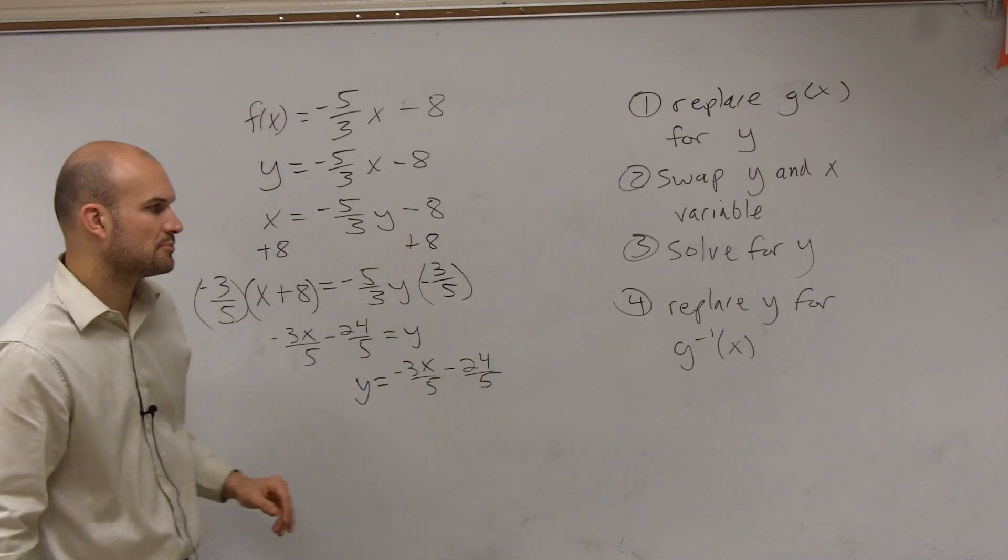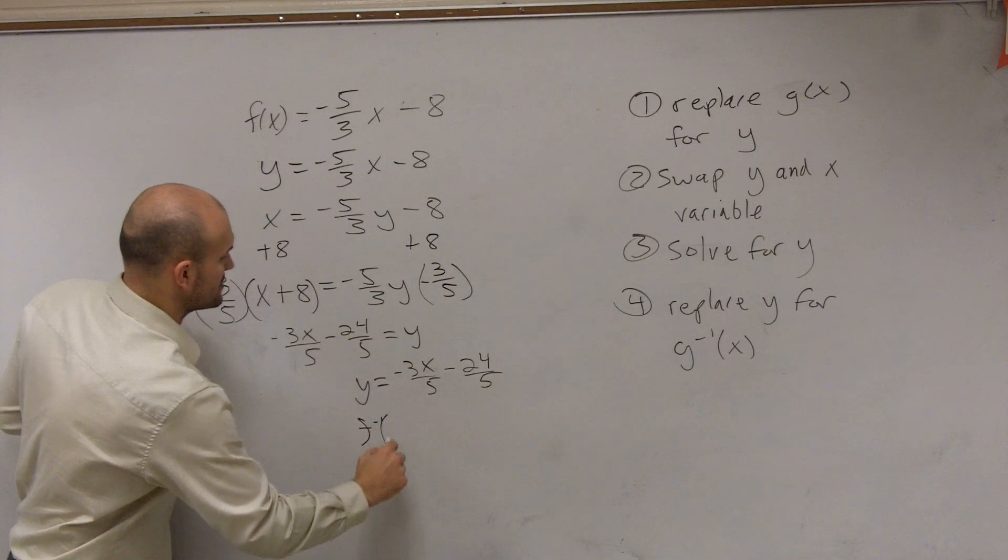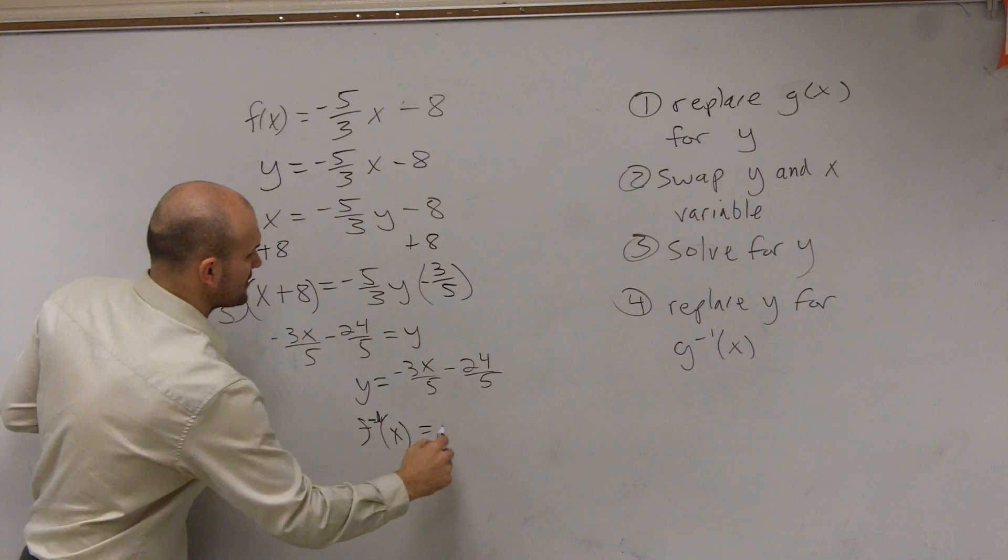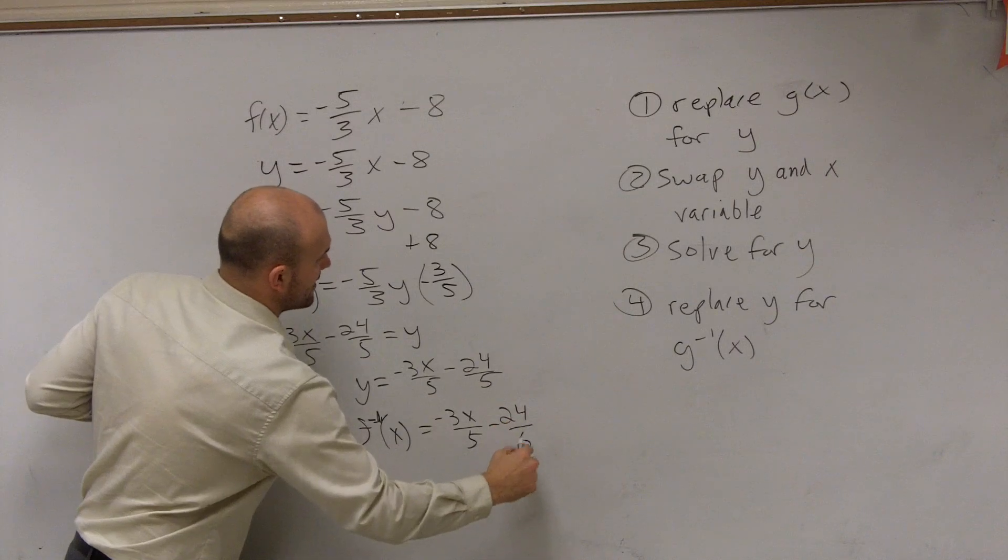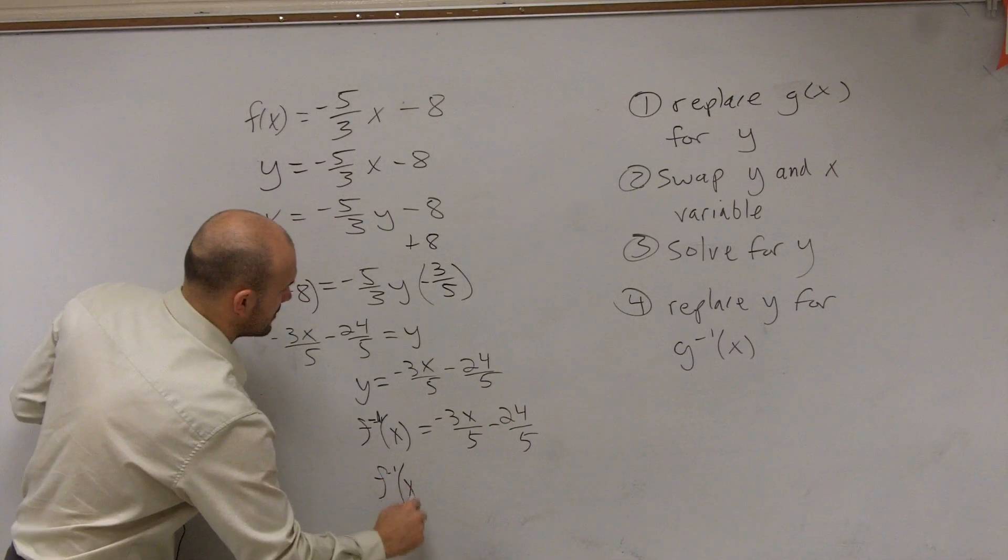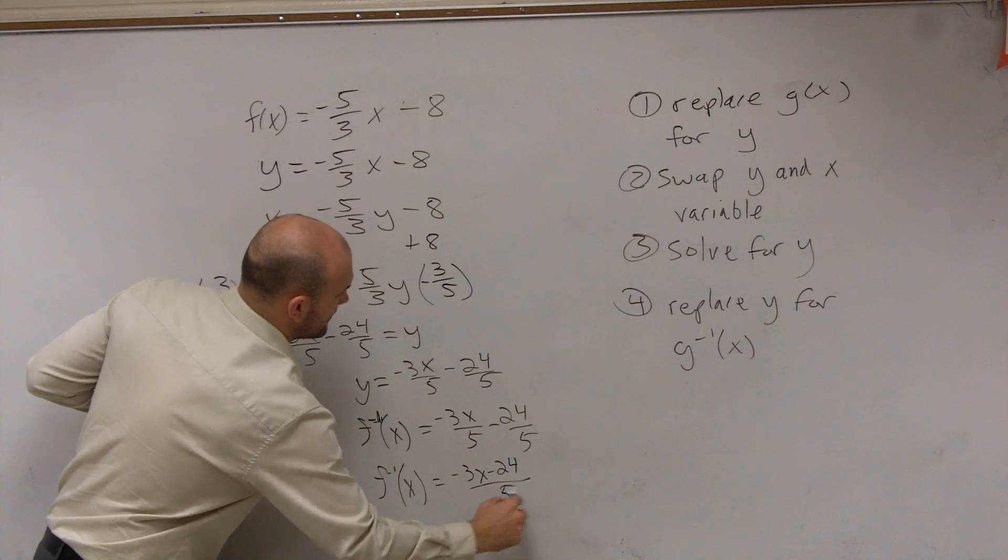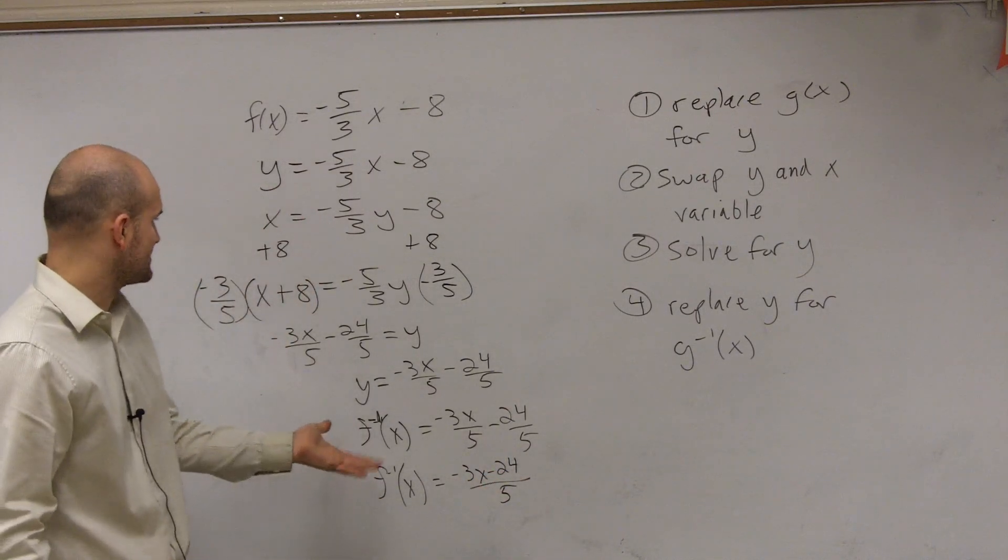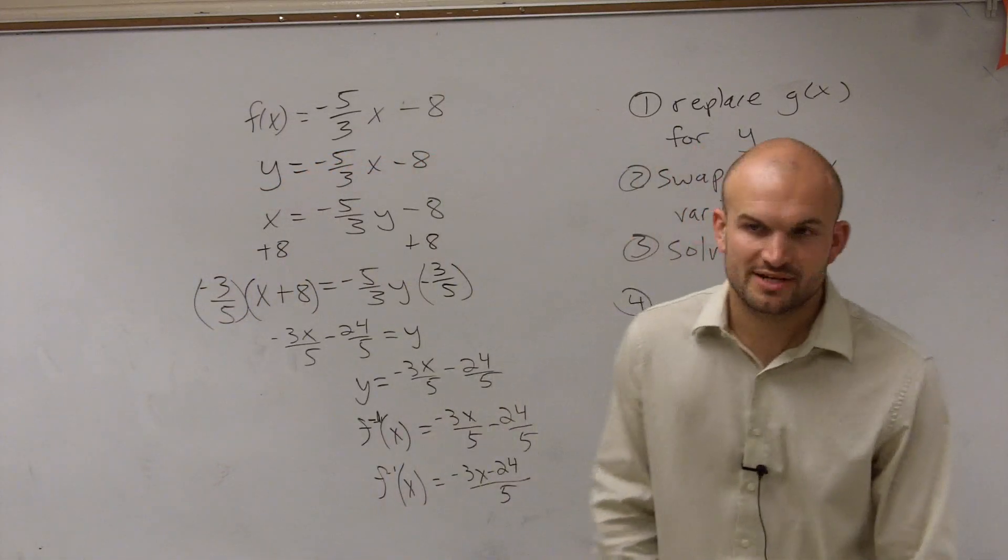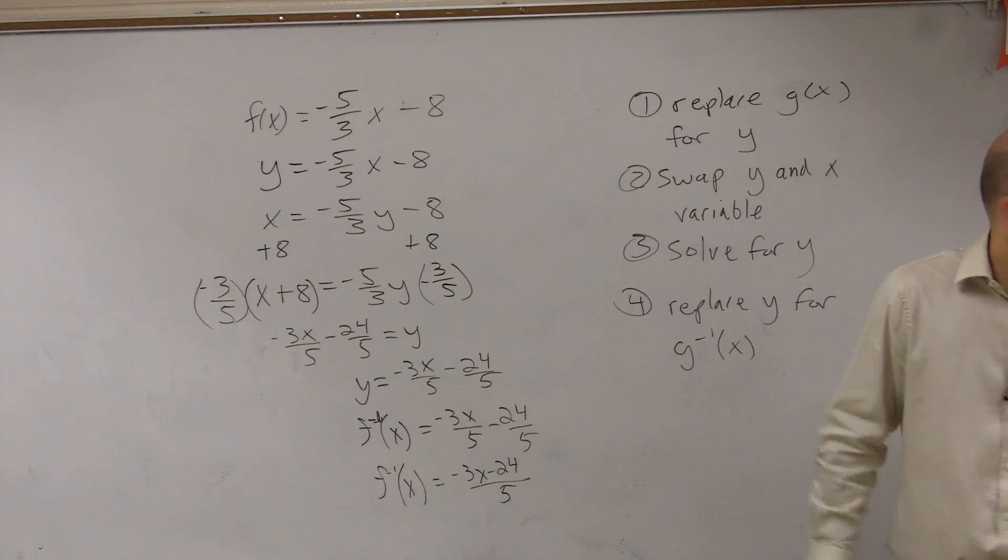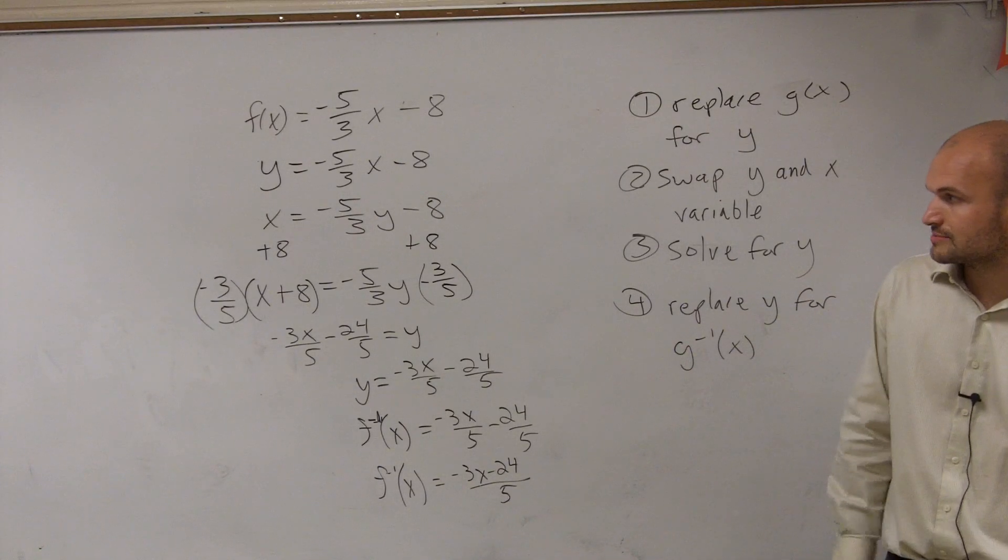Then our last step is to replace y for the inverse function. Now our function is f, so we'd say f inverse of x is equal to negative 3x over 5 minus 24 over 5. And you could combine that to equal negative 3x minus 24 over 5. You could also factor out a 3. There's a couple different simplifying ways, but since time is getting a little low, I'll leave you with that answer. You could factor out the 3, so it's just negative 3x plus 8 divided by 5.